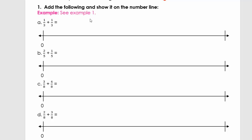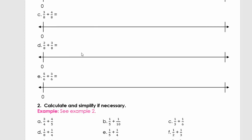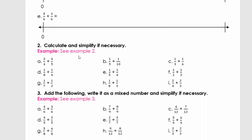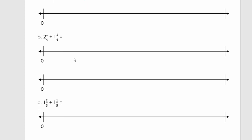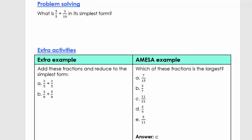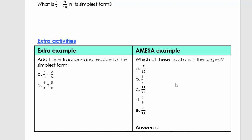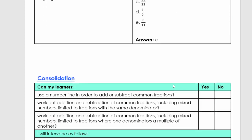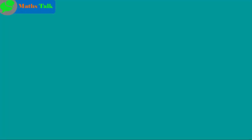It's time for your worksheet. You can do the DBE worksheets or the SA Teacher worksheets. If you need support, go back to your examples. Add more paper if needed for your workings. You also have problem solving activities, extra activities, and AMISA examples where questions come from old exam or test papers. Lastly, do the consolidation: if all answers are yes, carry on to the next lesson. If you have some no's, revisit and revise certain questions or ask your teacher for support.